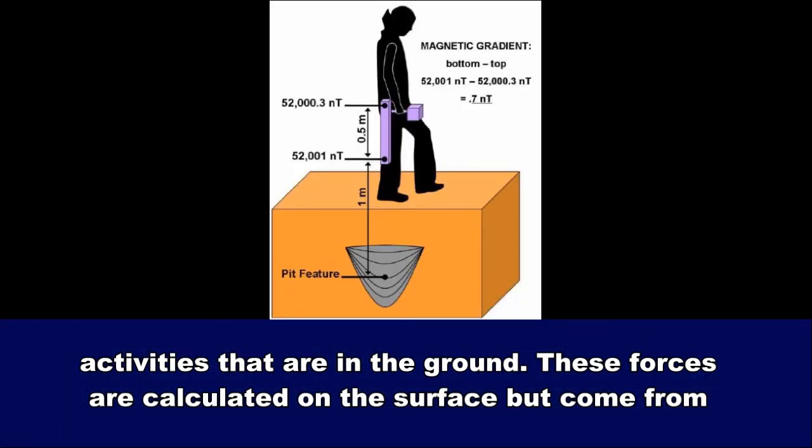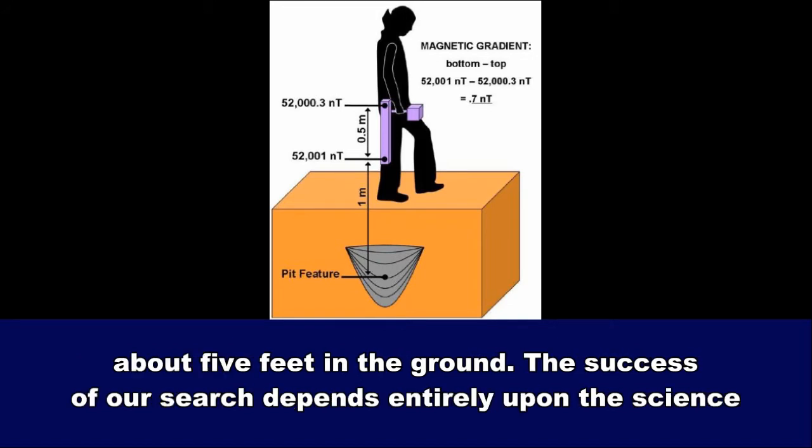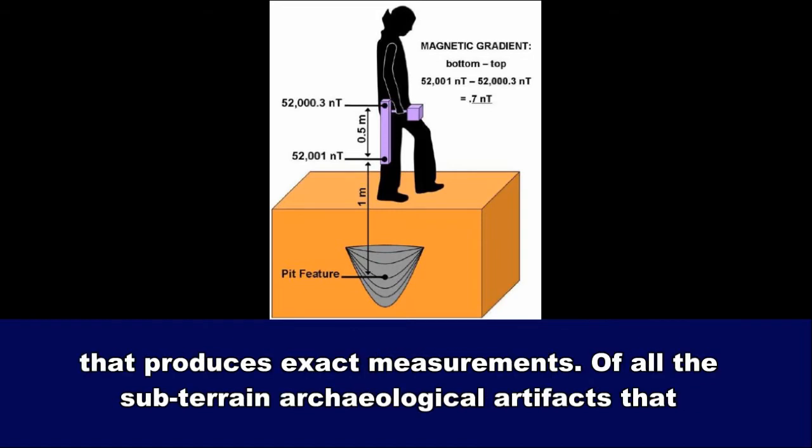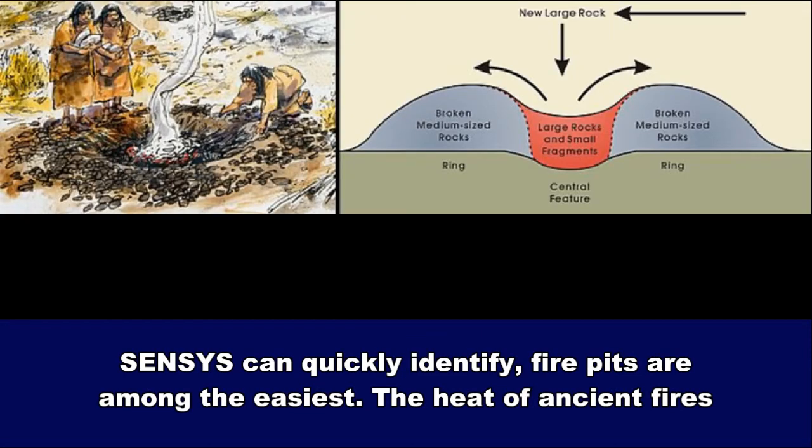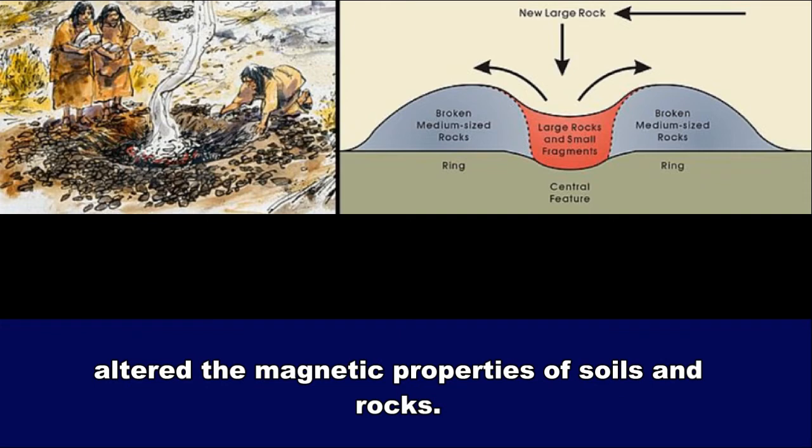These forces are calculated on the surface but come from about five feet in the ground. The success of our search depends entirely upon the science that produces exact measurements. Of all the subterrain archaeological artifacts that SENSI can quickly identify, fire pits are among the easiest. The heat of ancient fires altered the magnetic properties of soils and rocks.